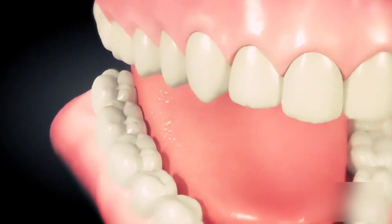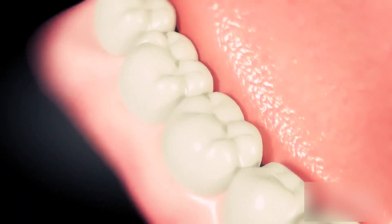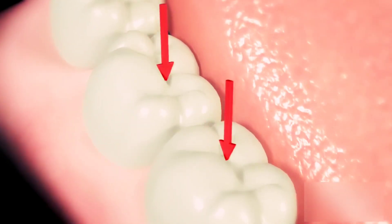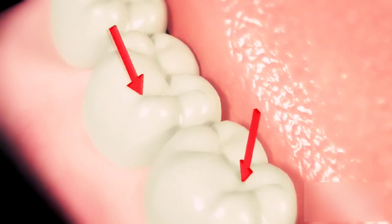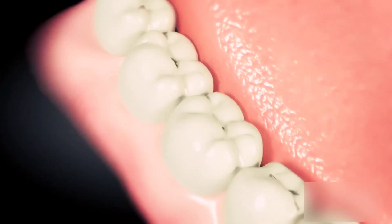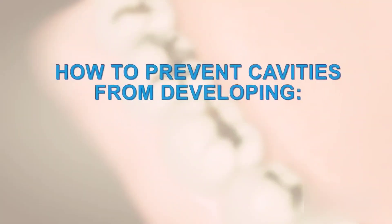Have you ever looked inside your mouth at the big teeth in the back? These teeth are called molars, and they have indentations and grooves on their tops and sides. This is where decay and dental carries start. There are a few things that you can do to help prevent cavities from developing.